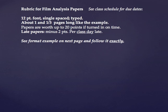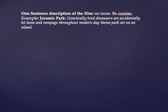We're going to start with a one-sentence description of the film — no more. Be concise; sometimes one sentence is harder to do than three or four or ten. For example, for Jurassic Park: 'Genetically bred dinosaurs are accidentally let loose and rampage throughout a modern-day theme park set on an island.' That's a log line — the sort of thing you might see on Netflix or Amazon or an old TV guide.